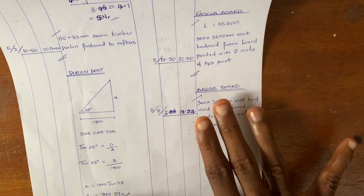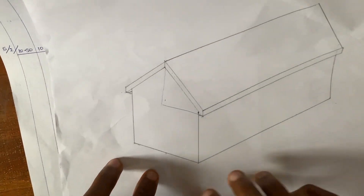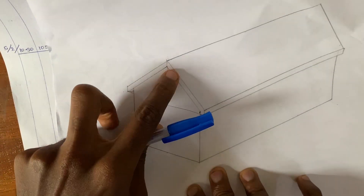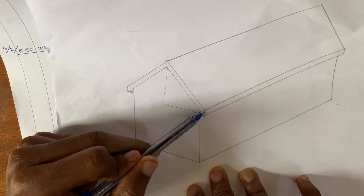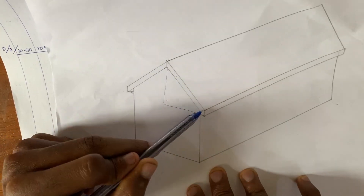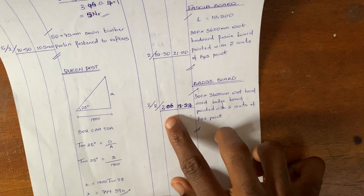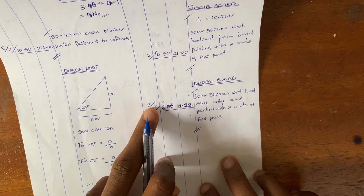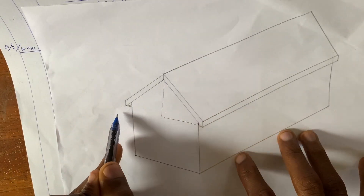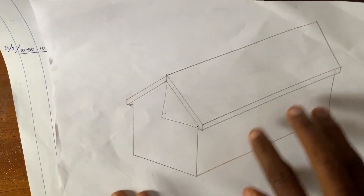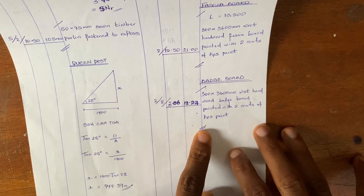The last thing we are measuring in this video is the barge board. The barge board is the slanting plank on the gable side of the roof. Since the length of the barge board is the same as the length of our rafter, we calculated our rafter as 3,057.94mm, which converts to 3.06m. We multiply by 2 because the barge board is two in number, then by 2 again for both sides of the roof, giving us our total barge board measurement.